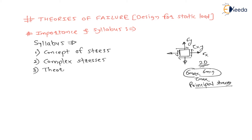We will see theories of failure, and basically there are five theories. For our syllabus, we have five theories of failure: Rankine's theory, Tresca's theory, St. Venant's theory, Haigh's theory, and Distortion Energy theory. These five theories we will see in detail.